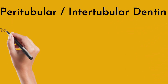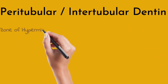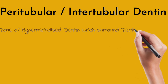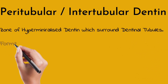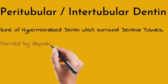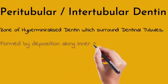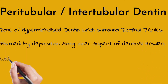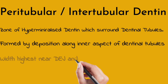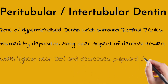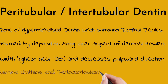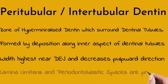The peritubular dentine is a zone of hypermineralized dentine that surrounds the dentinal tubules. It is formed by deposition along the inner aspect of the dentinal tubules. Its width is highest at the dentino-enamel junction and decreases in a pulpal direction. Important associated structures include lamina limitans and periodontoplastic spaces.